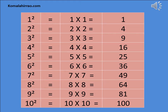1 square is equal to 1 x 1 is equal to 1. 2 square is equal to 2 x 2 is equal to 4. 3 square is equal to 3 x 3 is equal to 9. 4 square is equal to 4 x 4 is equal to 16.